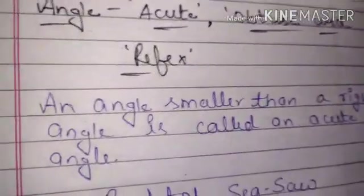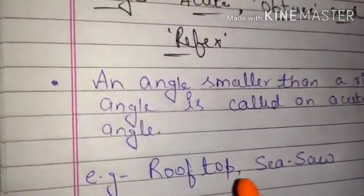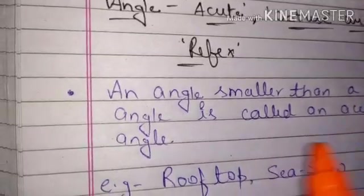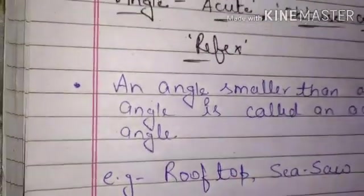Okay, definition of acute angle is, agar hum baat karein definition ki, the acute angle ki definition hoti hai bachon: an angle smaller than right angle is called an acute angle. Example mein ab dekh lijiye, roof top and seesaw.